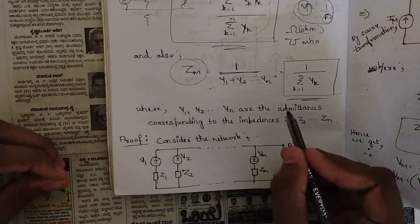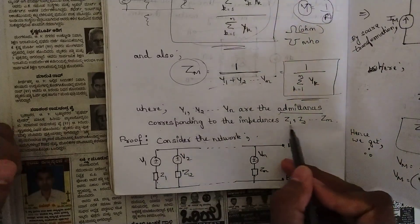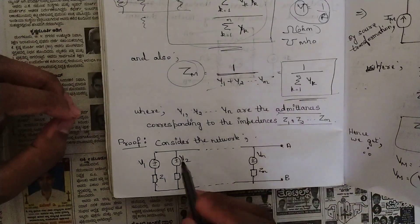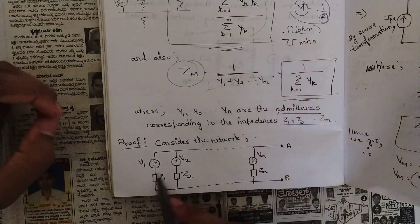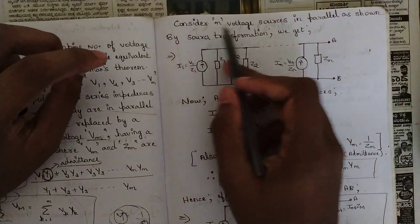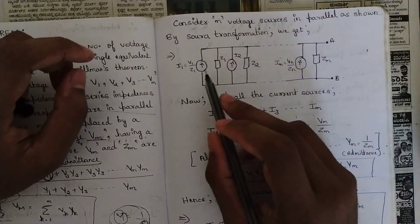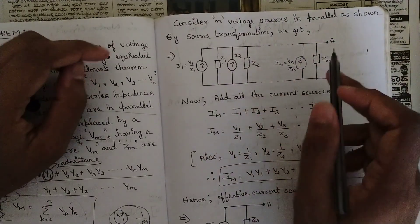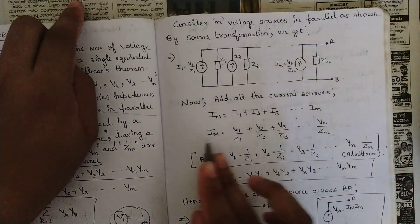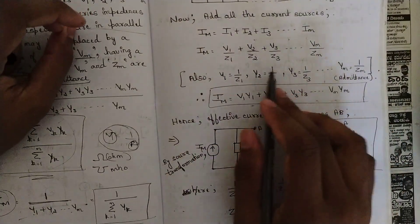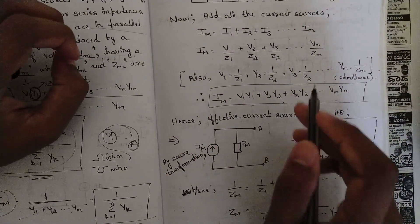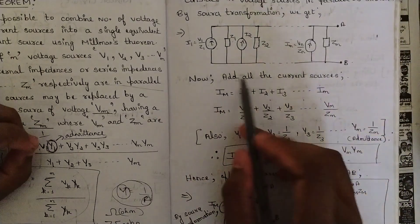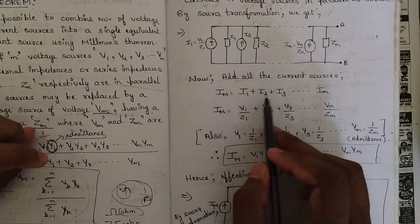Where Y1, Y2, ... Yn are the admittances corresponding to the impedances. Now consider this network with sources along with series impedances. What they have done in the proof is apply source transformation — which I already told you about — converting to parallel resistances and then adding all the current sources. The proof uses source transformation; that is just the proof part.